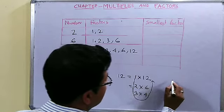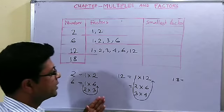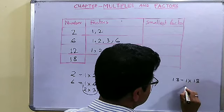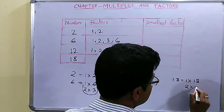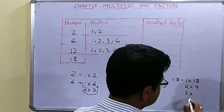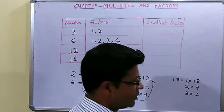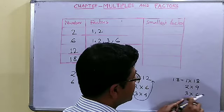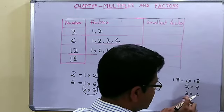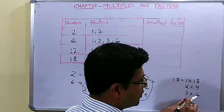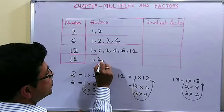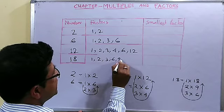Now if we take the number 18, what are the factors? 1 into 18. Then 2 into 9. Next is 3 into 6. If we take 4, we do not get 18. 5 into something is not 18. 6 is already covered. So the factors of 18 are 1, 2, 3, 6, 9 and 18.